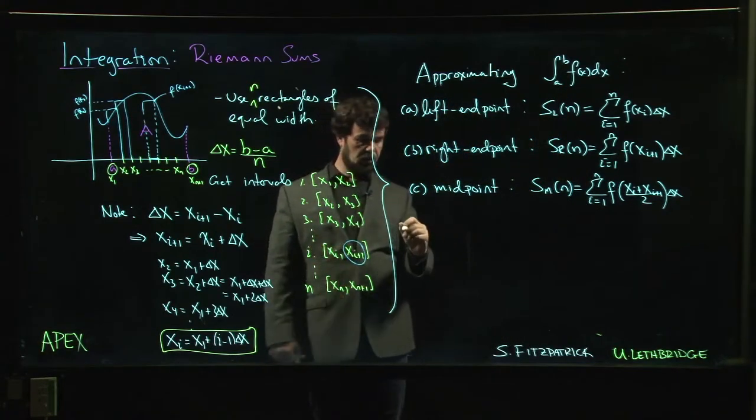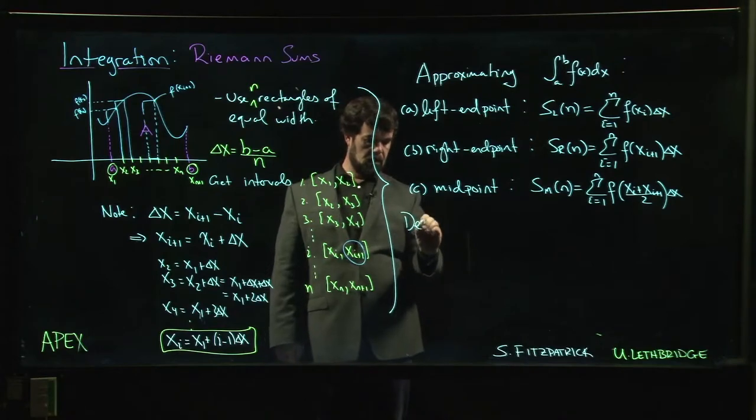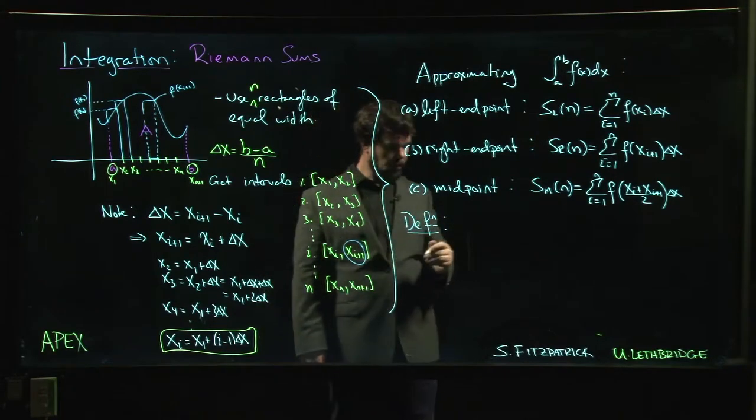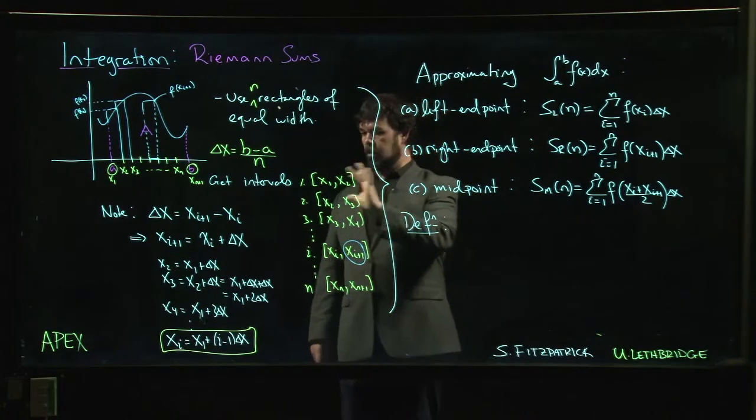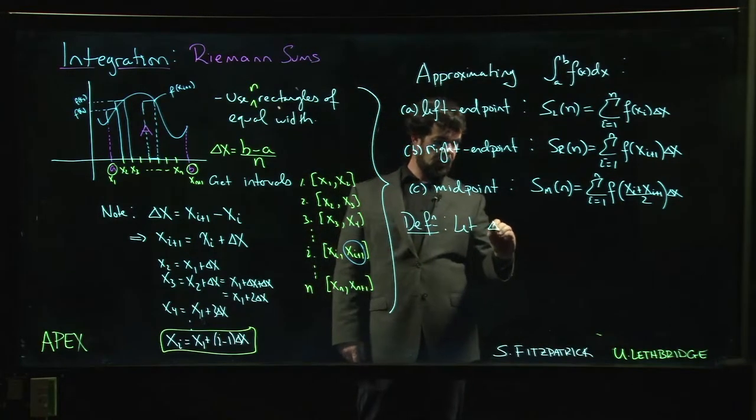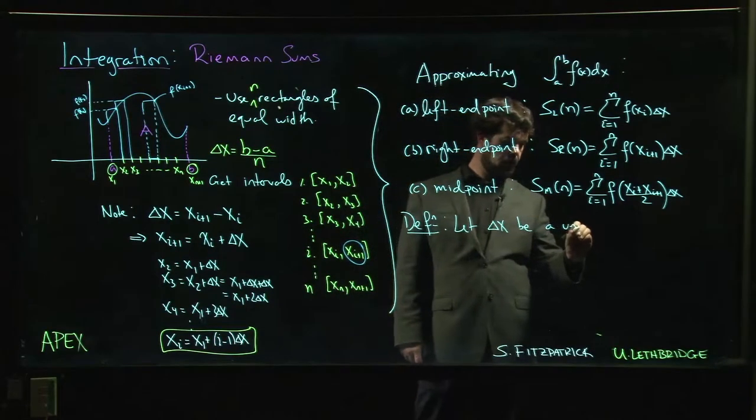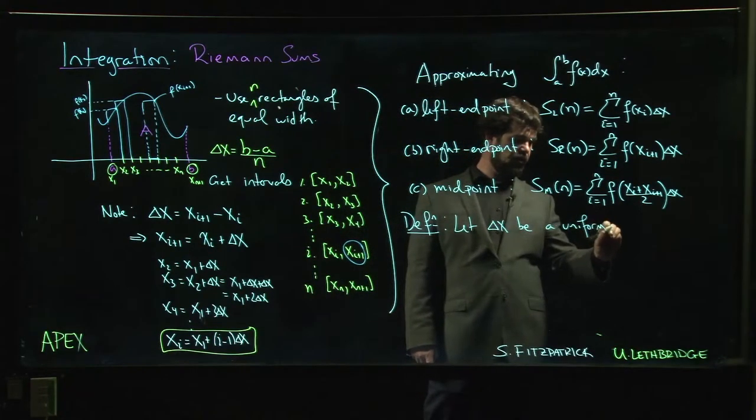When we're approximating these integrals, what we use instead of Darbu sums is we use something called a Riemann sum. So let delta x be a... so these are called uniform partitions.